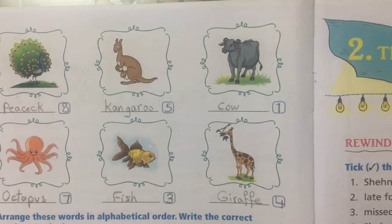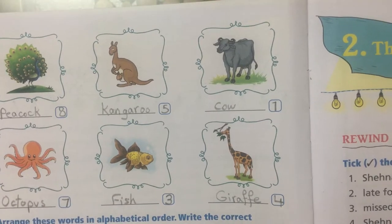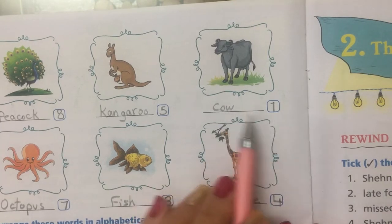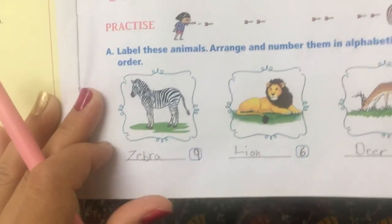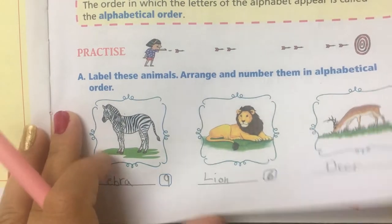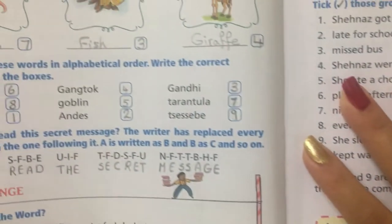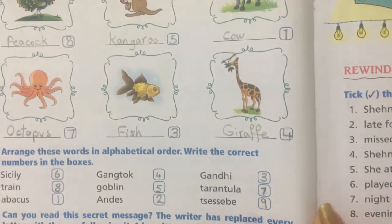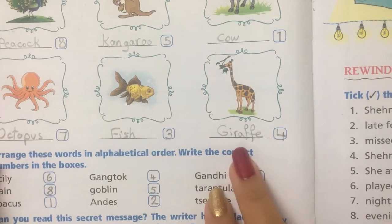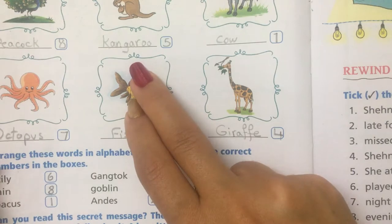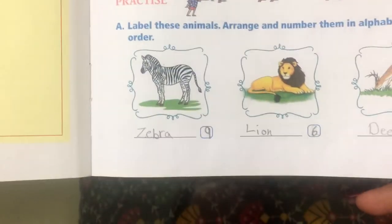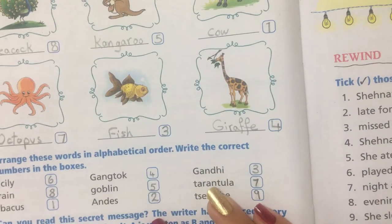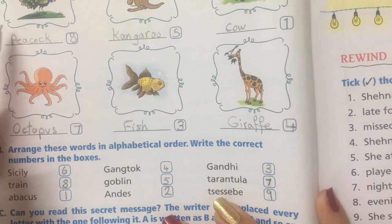Now you should just arrange them in the alphabetical order. So the sequence will be: number one is cow, number two is deer, three is fish, four is giraffe, five is kangaroo, six is lion, seven is octopus, eight is peacock, and the last one is zebra.